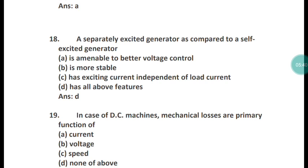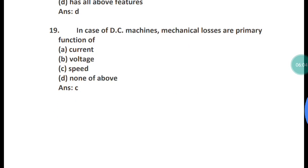Question 18: A separately excited generator as compared to a self-excited generator has what? It has better voltage control, is more stable, and has exciting current independent of load current. The correct answer is option D — all of the above.